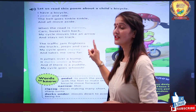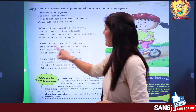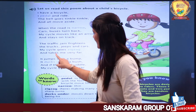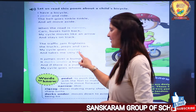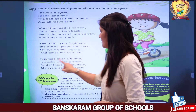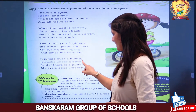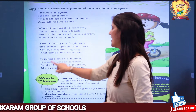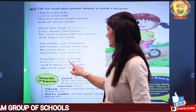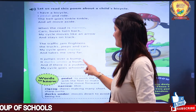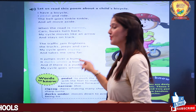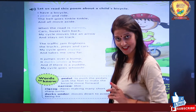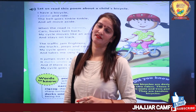My cycle moves like an arrow and stays on track. The traffic jam frightens the trucks, jeeps and cars. My cycle goes zigzag and takes me very far. It jumps over a bump, it ducks under a bush, and if there is a puddle, my cycle goes hoosh. Then don't forget to read.